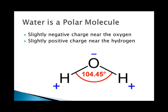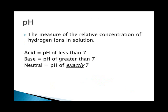One of the key characteristics of water and water-based solutions, called aqueous solutions, is the pH, which is the measure of relative hydrogen ions in concentration. Acids have a pH below 7, bases have a pH above 7, and neutral has a pH of exactly 7.